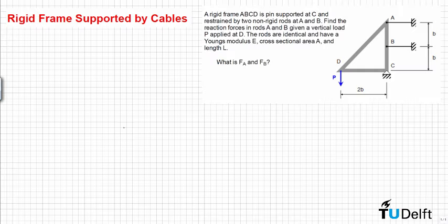In this problem we have a rigid frame ABCD which is pin supported at point C and restrained by two non-rigid rods at points A and B. We have to find the reaction forces in the rods A and B, given a vertical load P applied at D. The rods are identical and have Young's modulus E, cross-sectional area A, and length L. What is FA and FB?